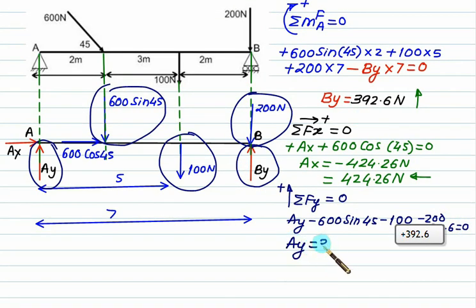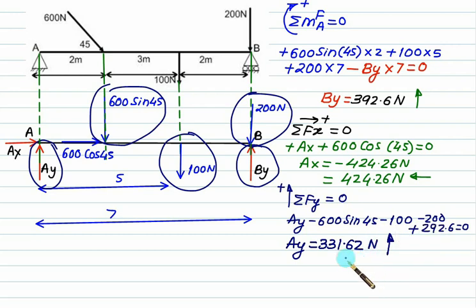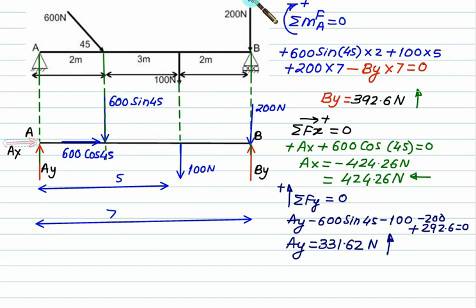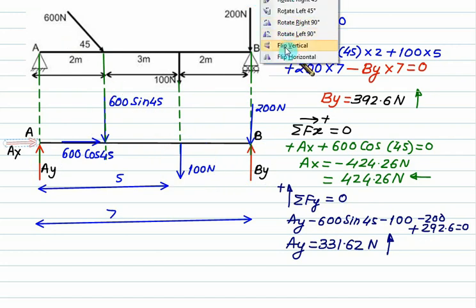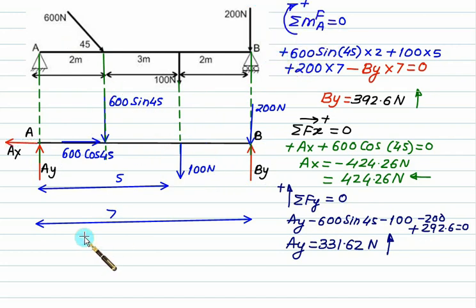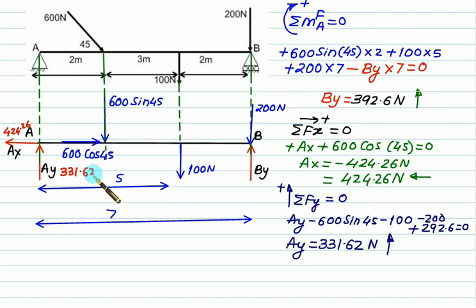We get Ay = 331.62 N. Since the answer is positive, it acts vertically upward. So we have two reactions at A: Ax = 424.26 N leftward and Ay = 331.62 N upward. The resultant reaction at A is represented as Ra. You can verify by checking sigma Fx and sigma Fy both equal zero.